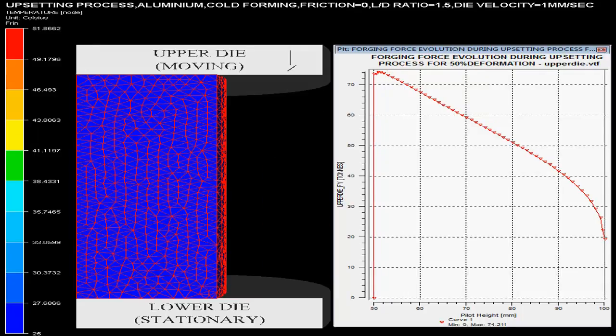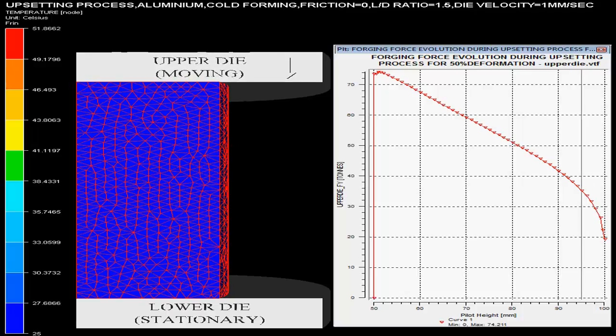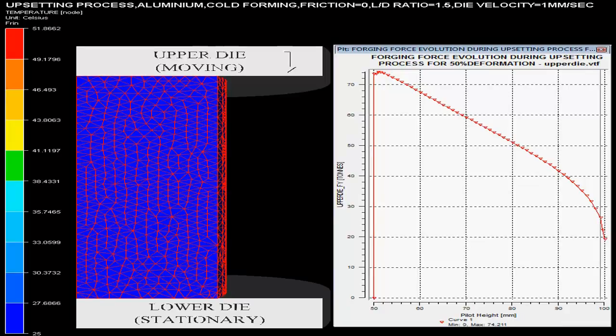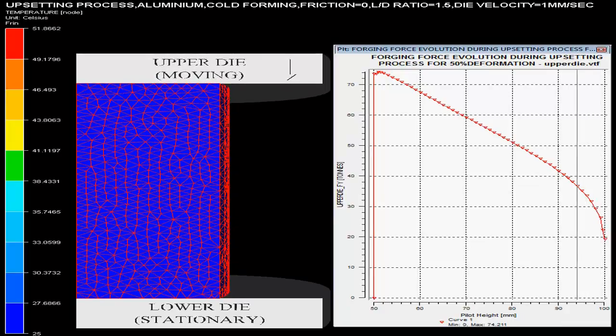The upper die presses with the velocity of 1 mm per second with the lower die stationary. On the right hand side one could see the graph of forging force on upper die versus billet height.